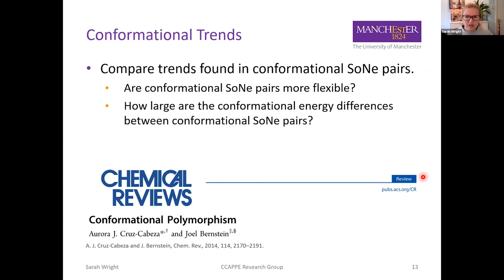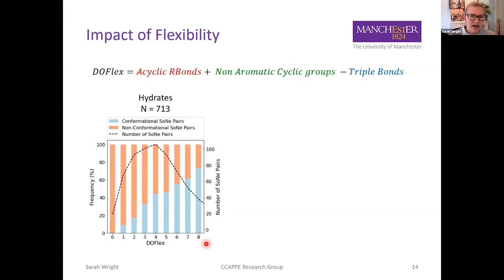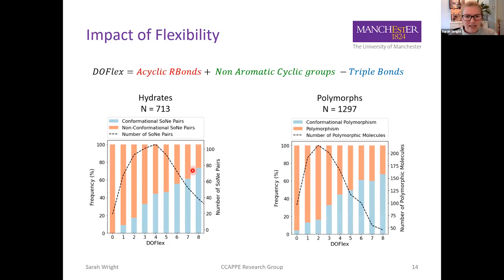We want to find out whether conformational solvate-neat pairs are more flexible than non-conformational ones and how large the conformational energy differences are. We describe flexibility using the degree of flexibility, which accounts for the number of acyclic bonds, non-aromatic cyclic groups, and triple bonds. We can see that as the degree of flexibility increases, hydrates are more likely to be conformational solvate-neat pairs. This trend is observed across many of our solvate types and is very comparable to the observations found for conformational polymorphs.